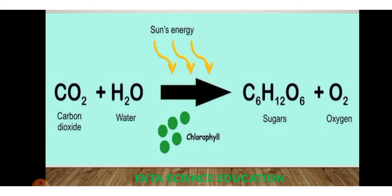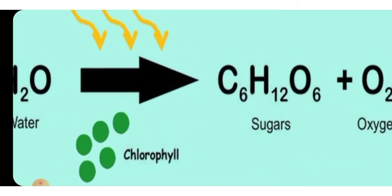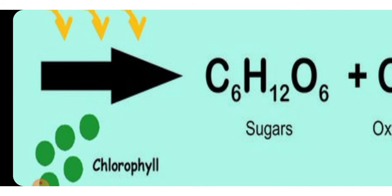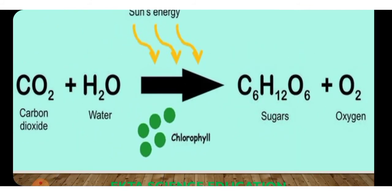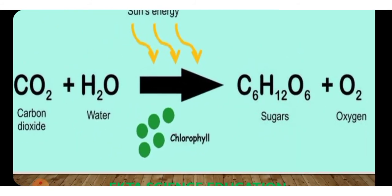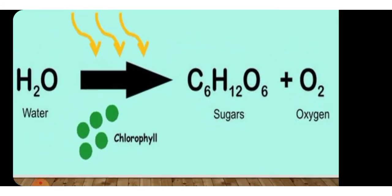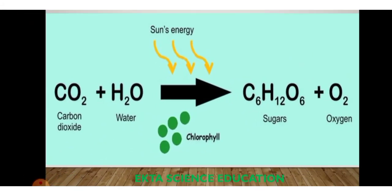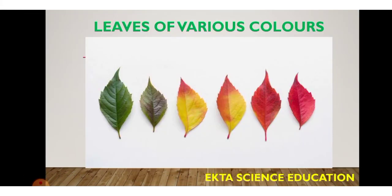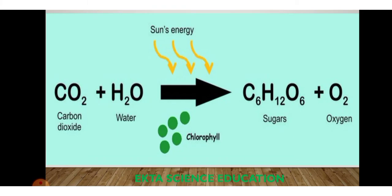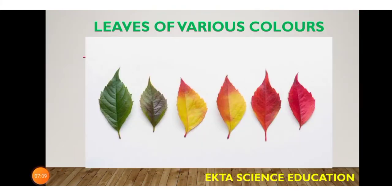The chemical reaction of photosynthesis: carbon dioxide plus water, with sun energy and in the presence of chlorophyll pigment, produces sugar — specifically glucose (C6H12O6) — plus oxygen gas, which is released into the atmosphere.